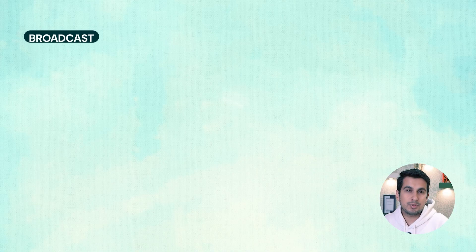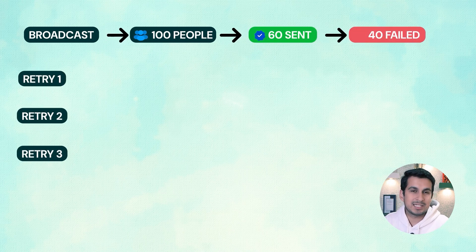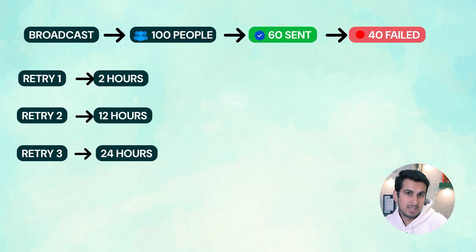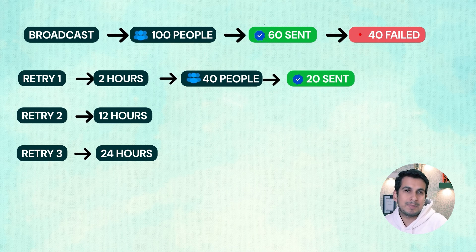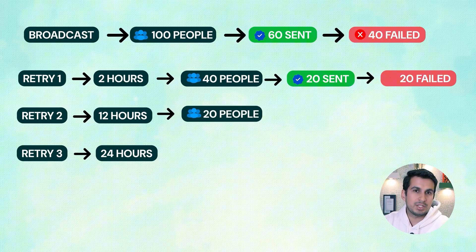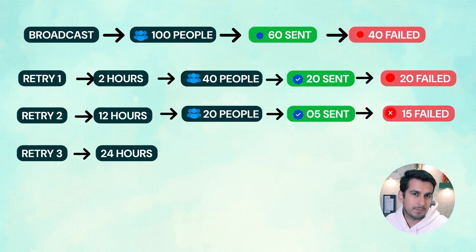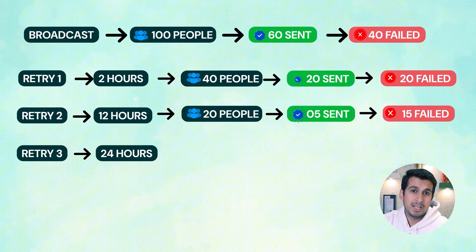You can set up to 3 automated retries. For example, you sent a broadcast to 100 people and it only reached 60 in the first go. If you set up 3 retries — say after 2 hours, 12 hours, and 24 hours — the first retry will attempt delivery to the remaining 40 people. If 20 succeed and 20 still fail, the second retry goes to those 20. If 5 are delivered and 15 remain, the third retry sends to those 15.